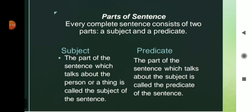Now we will see parts of sentence. Every complete sentence consists of two parts: a subject and a predicate. What is a subject? The part of the sentence which talks about the person or a thing is called the subject of the sentence. Whereas, the part of the sentence which talks about the subject is called the predicate of the sentence.